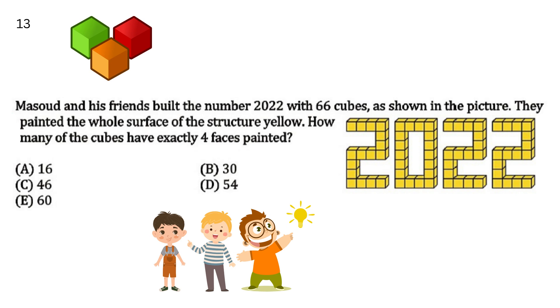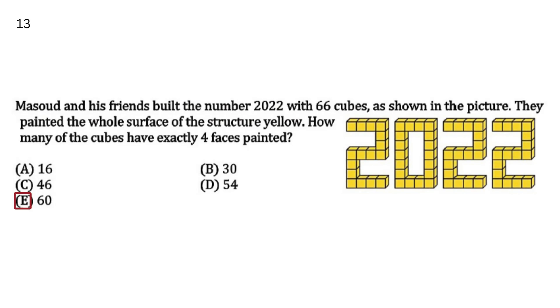अगर हम एक 2 को देखें, तो इस में total 16 cubes हैं, और zero के अंदर हमारे पास 18 cubes हैं. But the cubes that are at the corner and touching the floor at the same time will not be painted on the four sides. नीचे वाले cubes, जो corner पे हैं और नीचे touch कर रहे हैं, three sides पर. So your answer will be E 60.